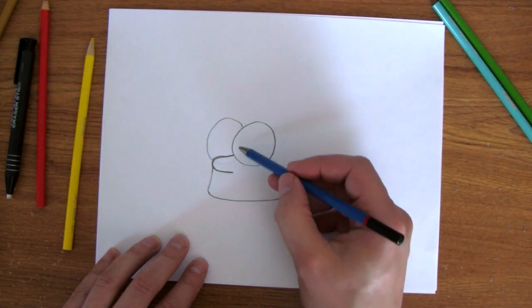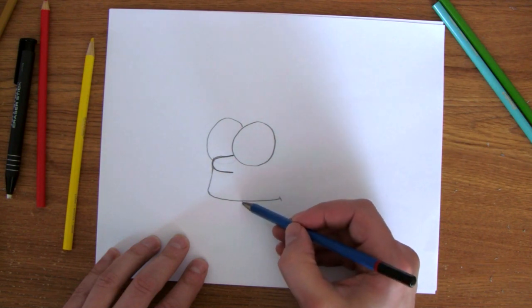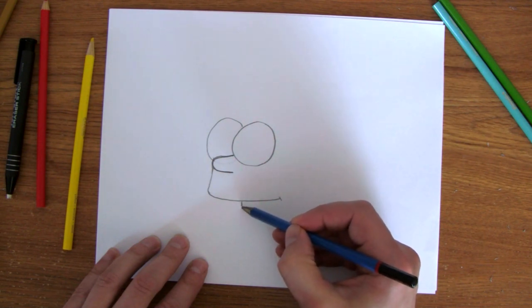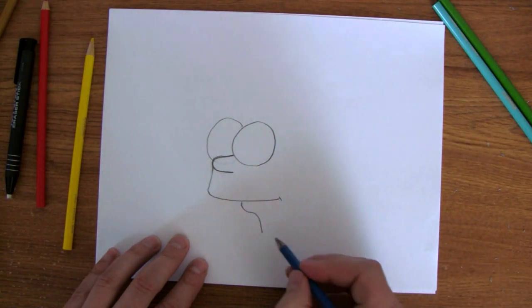Now, his lip starts about halfway on his first eye. About here. And that will be his neck.